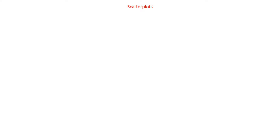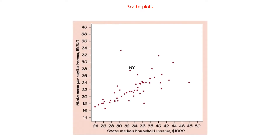So, scatter plots — what are they? Well, they look kind of like this. It's just a whole bunch of points plotted. We just plot points. That's what we do.